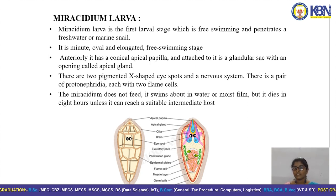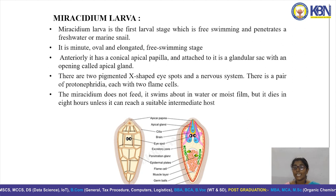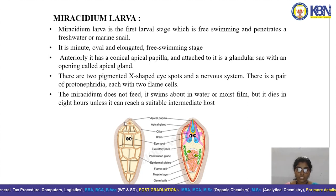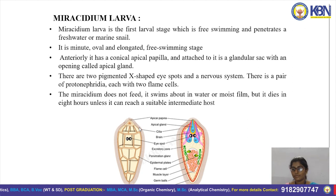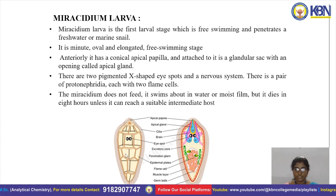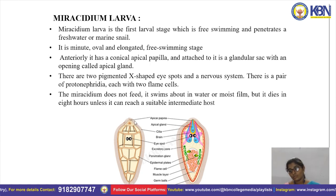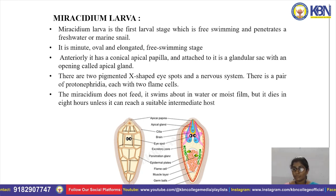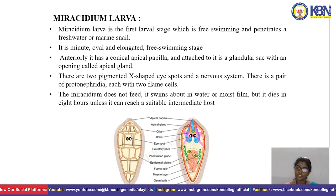The miracidium is the first larval stage and is a free-swimming larva. The body of the miracidium larva consists of cilia which help in free swimming. It is minute, oval, and elongated in structure. It doesn't feed but swims in water or any moist film, and dies in eight hours unless it can reach the intermediate host.